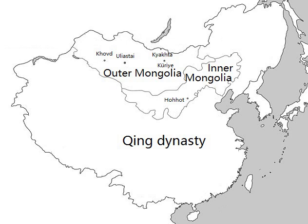Wai Menggu was a territory of the Manchu-led Qing dynasty from 1691 to 1911. Its area was roughly equivalent to that of the modern state of Mongolia, which is sometimes called North Mongolia in China today, plus the Russian Republic of Tuva.